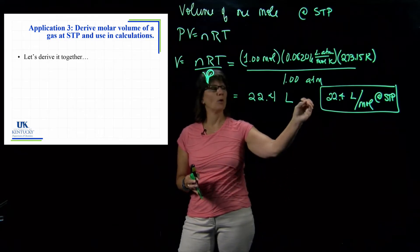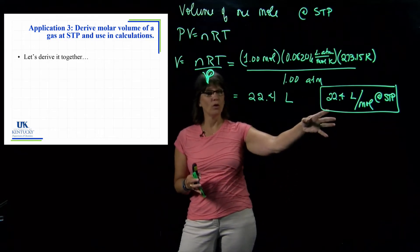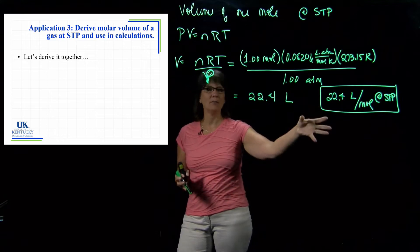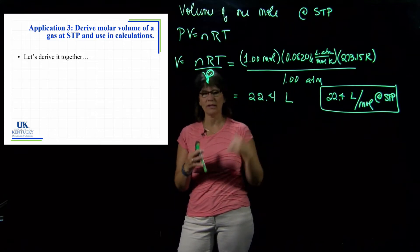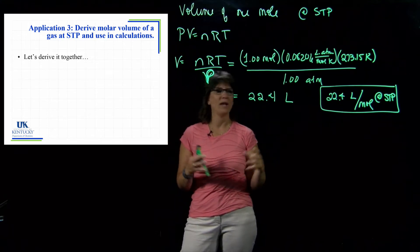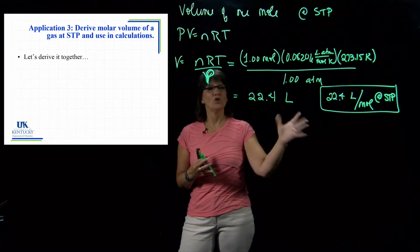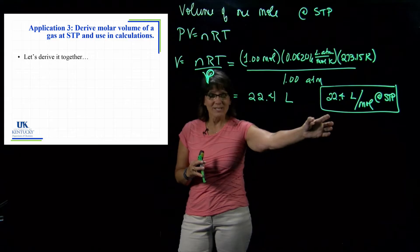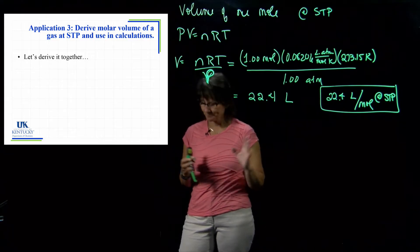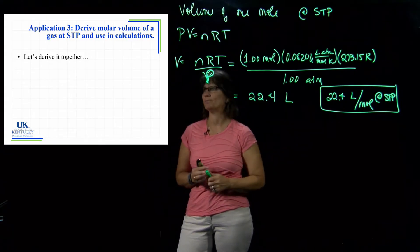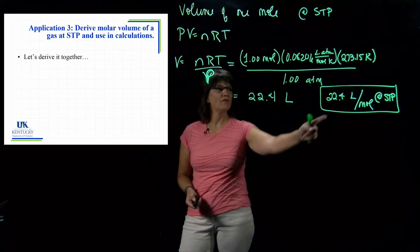They use numbers that were multiples of 22.4, so it was easy to divide. Like it was 44.8 divided by 22.4, you could easily say that was 2. So now we have derived the molar volume of a gas at STP.